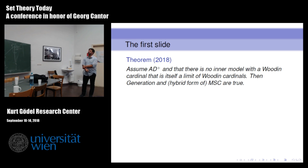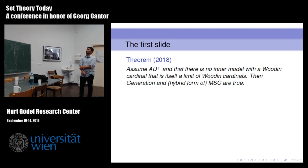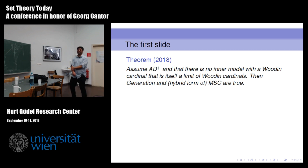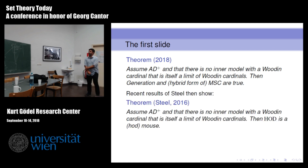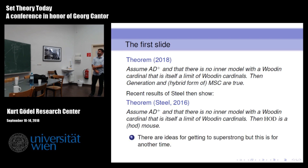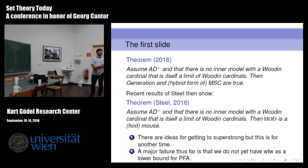But this is not the last slide - the first slide. Since 2009, I've tried to bring everything to the level of Woodin cardinals that are limits of Woodin cardinals. Of course, you want to go to super-strong - that would be the goal - but that's harder. So: assume AD⁺ and there is no inner model with a Woodin cardinal that is itself a limit of Woodin cardinals. Then you can prove generation and the hybrid form of the Mouse Set Conjecture. The proof is correct but not yet written up. Combining that with recent results of Steel, you get: if there is no inner model with a Woodin cardinal that is a limit of Woodin cardinals, then HOD of that model is a mouse. This brings us to the level of Woodin limit of Woodins. There are ideas to get up to super-strong for another time.